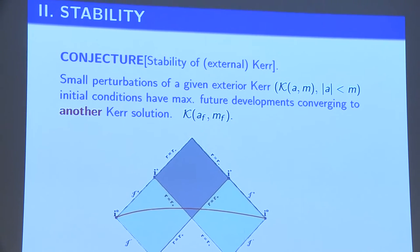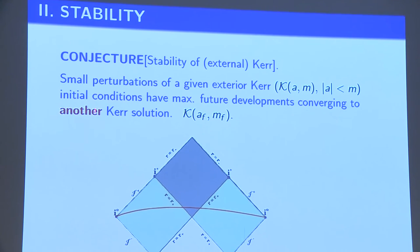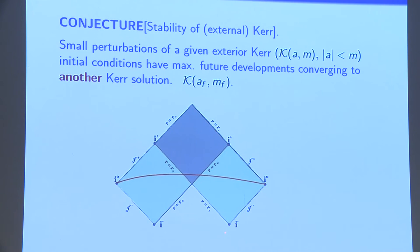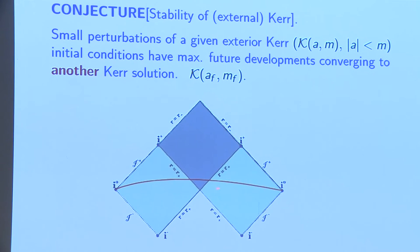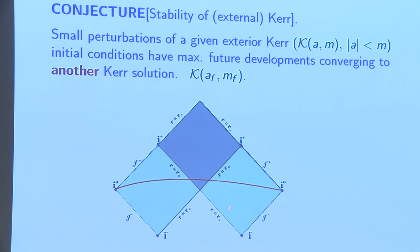Here is the stability conjecture: stability of external Kerr. I take initial data of the Kerr solution on a spacelike hypersurface, perturb it a little bit, and the conjecture says that small perturbations of a given external Kerr solution have a maximum future development which converges to another Kerr solution — possibly with different parameters A and M. This leads to many additional difficulties in the analysis.